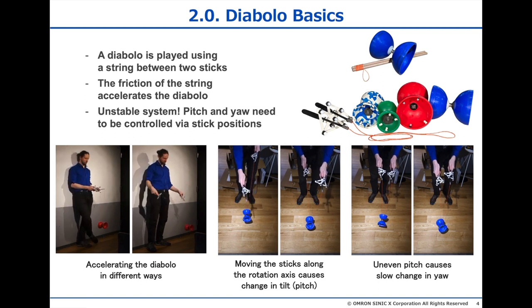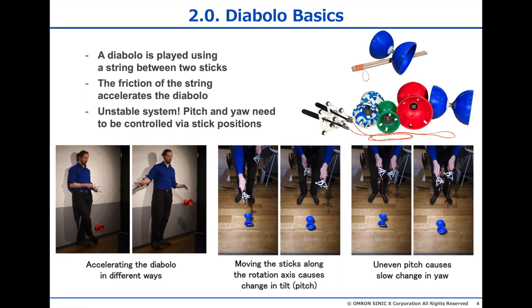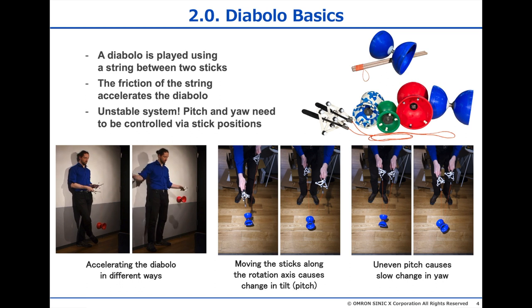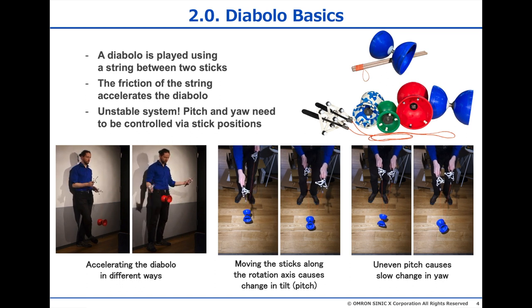If the Diabolo is tilted, it starts to rotate around the vertical axes, slowly, like on the videos on the right. So to summarize, the string friction is important, the pitch and yaw changes, but only slowly.